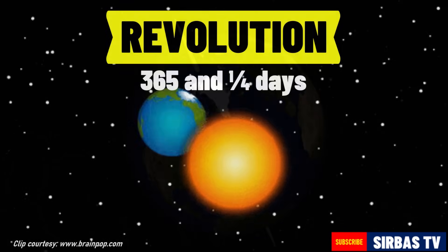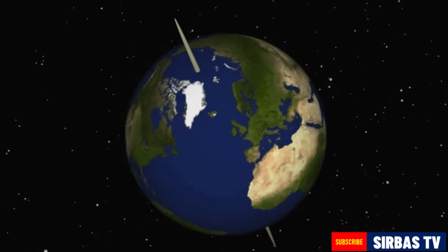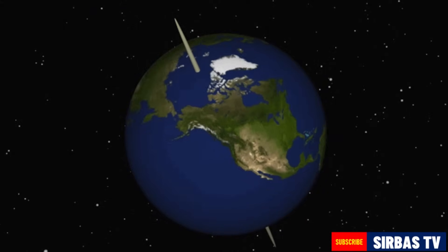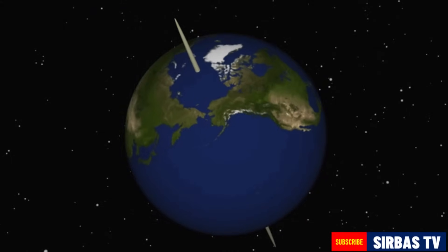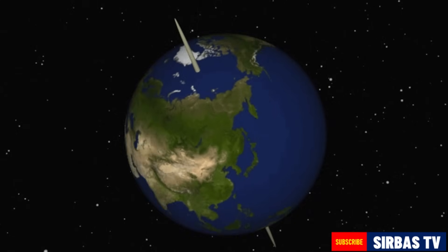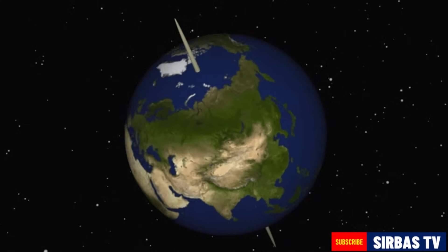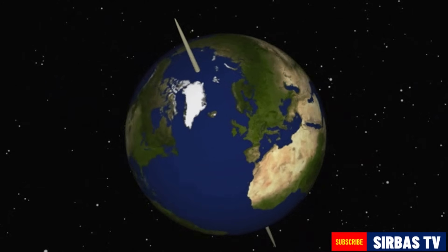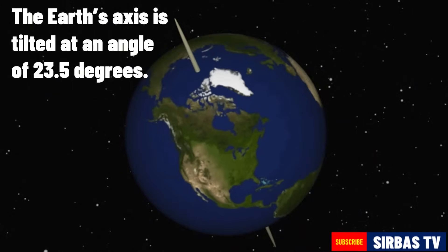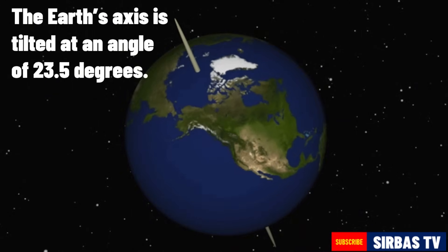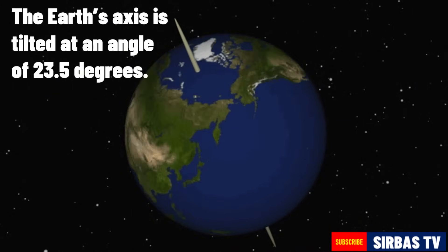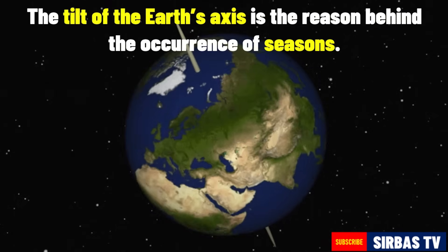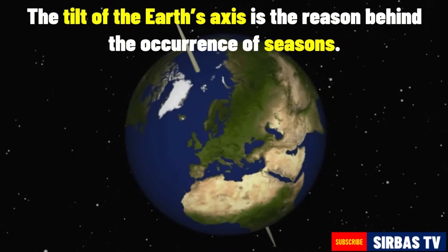Look at the axis of the Earth. What can you observe? The axis of the Earth is tilted or slanted and turned toward one side. The Earth's axis is tilted at an angle of 23.5 degrees. The tilt of the Earth's axis is the reason behind the occurrence of seasons.